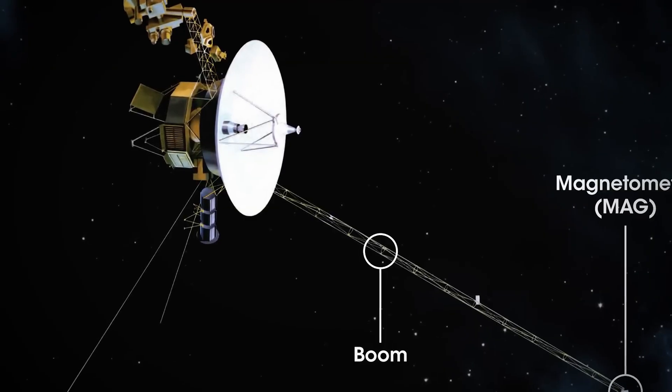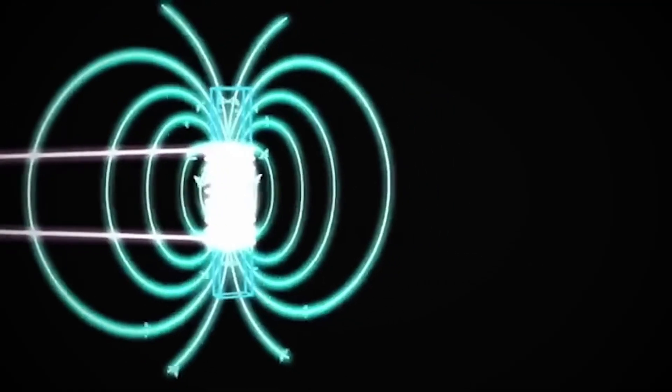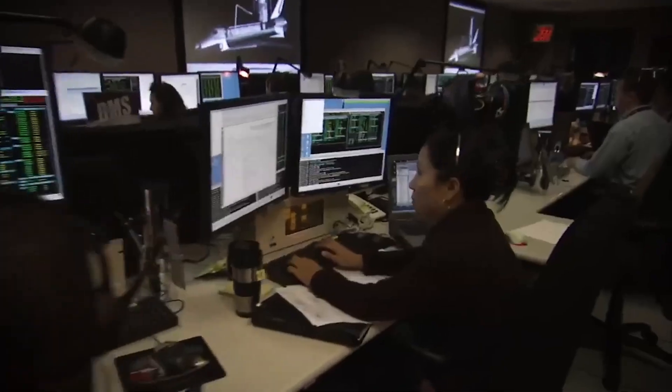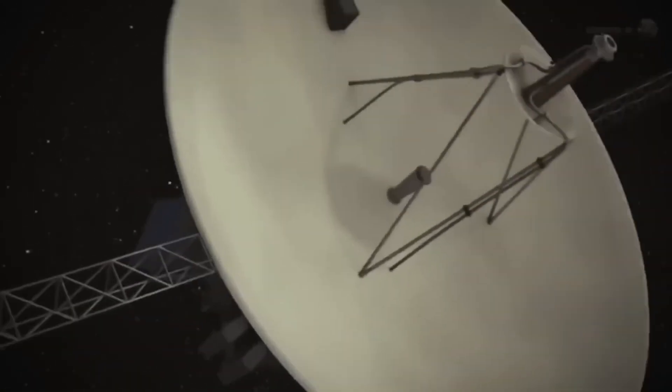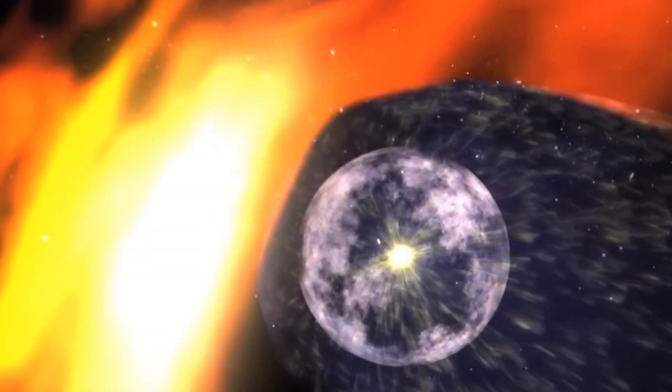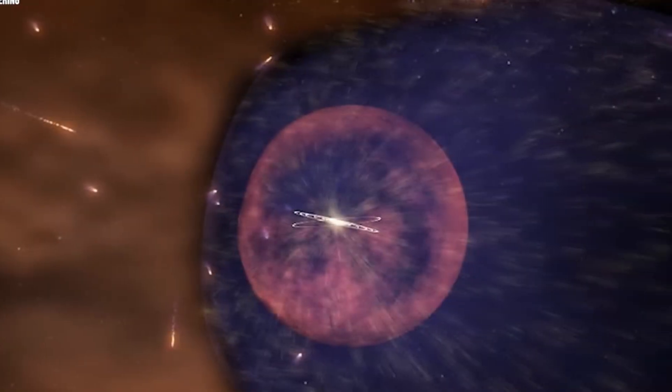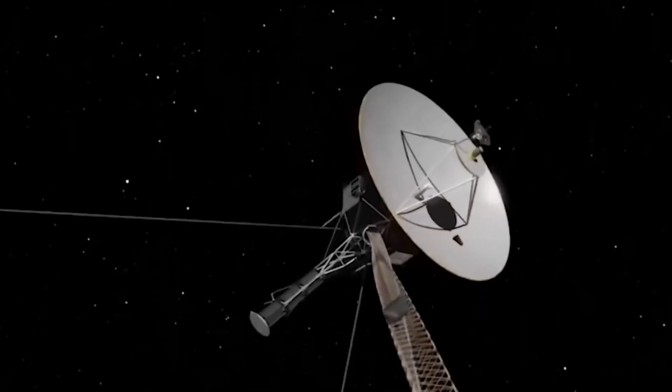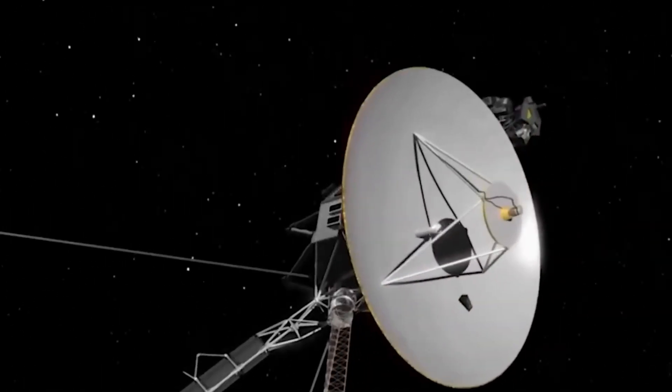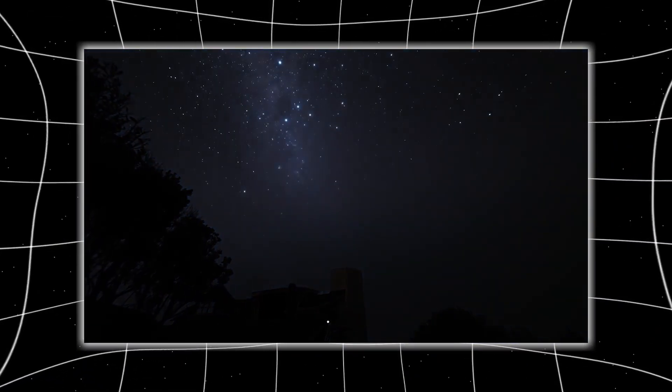Some regions deflect cosmic rays. Others funnel them in streams like radiation rivers in the dark. Voyager found it had crossed one such threshold, a sharp spike in high-energy particles accelerated by distant black holes and supernovae, slamming into the probe at near-light speed. These weren't gradual changes. They were abrupt, sharp, like stepping from one biome into another.